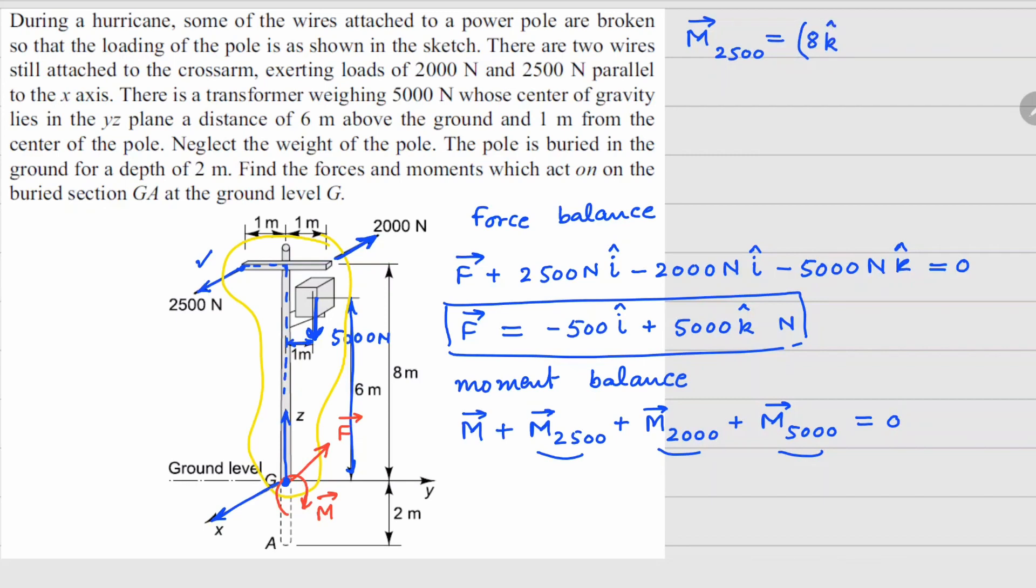And then when I go left, I'm going 1 meter in the minus y direction, which is minus 1 j cap. So this is r cross. F force in this case is going to be along the x direction. So 2500 i cap.